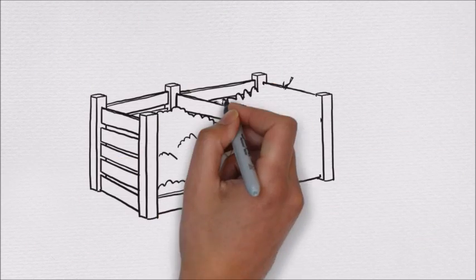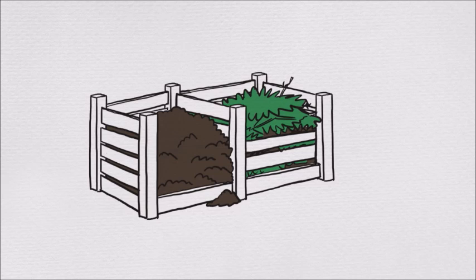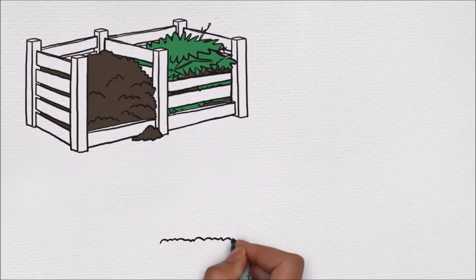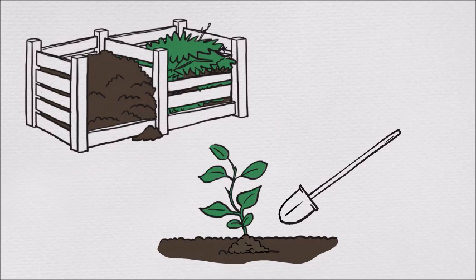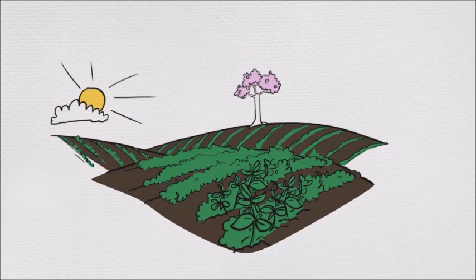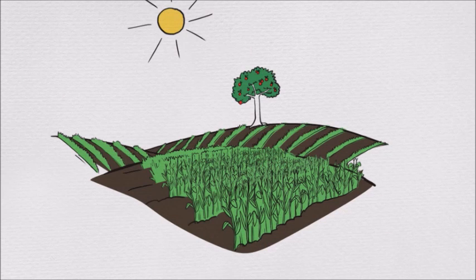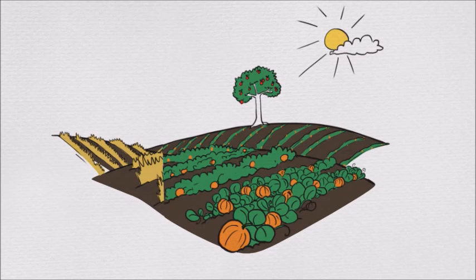Organic practices create healthy soil by building matter. Instead of using synthetic fertilizer, organic farming puts the best elements back into the earth naturally. And organic farmers rotate their crops, which keeps the soil nourished, preserves moisture, and reduces erosion.